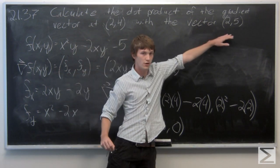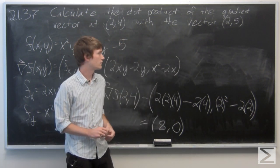Now we're going to take the dot product of (8,0) with the vector (2,5).